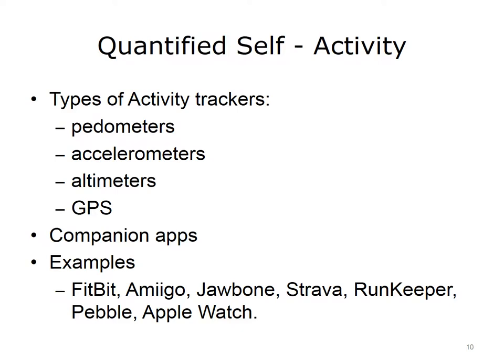Activity trackers are wearable devices that monitor and record a person's fitness activity and biologic response. Sensors are used to calculate mileage, caloric expenditure, physical activity, heart rate, temperature, and so forth. Sensor examples include pedometers for counting steps, accelerometers to detect acceleration, altimeters, which measure the altitude of an object above a fixed level, and GPS for geolocation. Many commercial devices for sale include companion apps to track, visualize, analyze, and share data. Gamification may also be used to promote competition, with the goal of enhancing use. Available examples include Fitbit, Amigo, Jawbone, Strava, RunKeeper, Pebble, and Apple Watch.